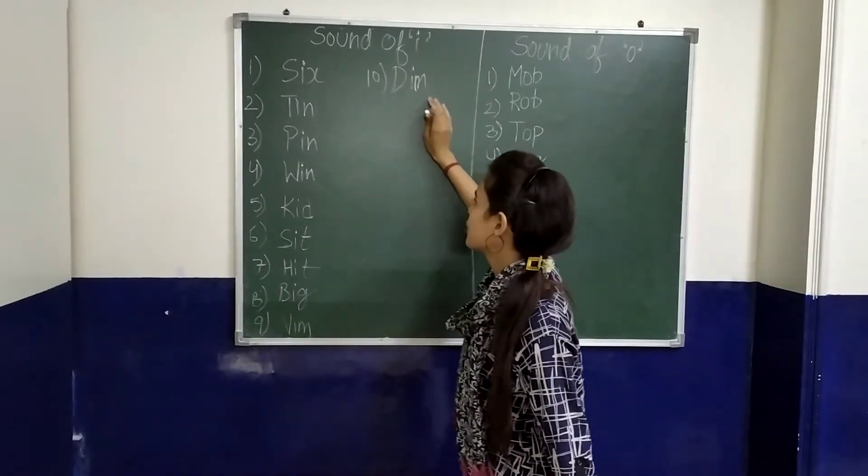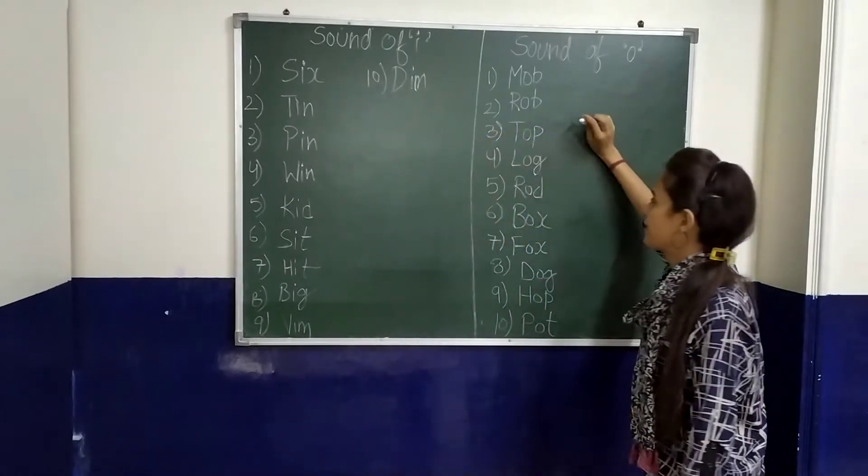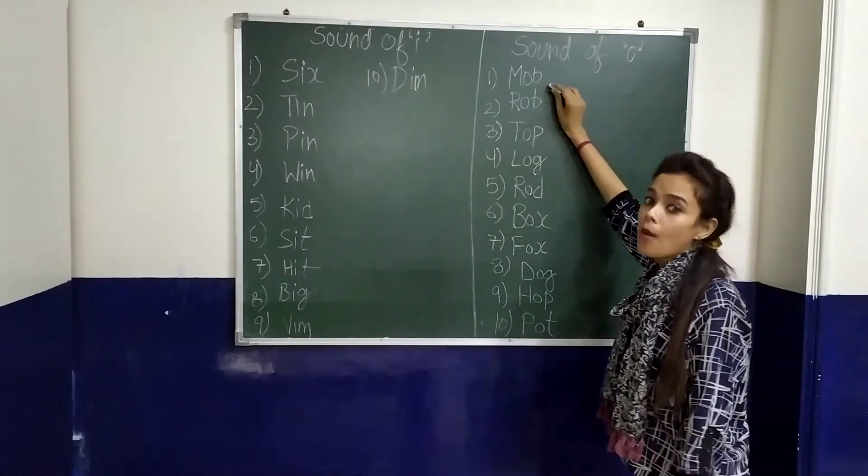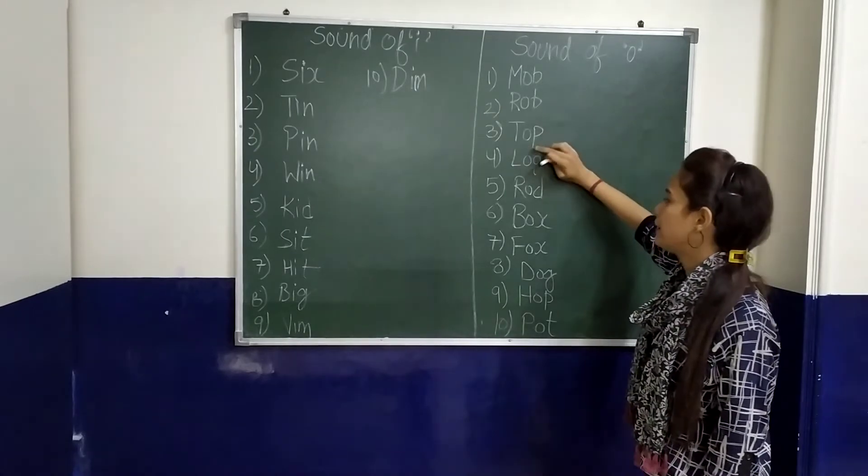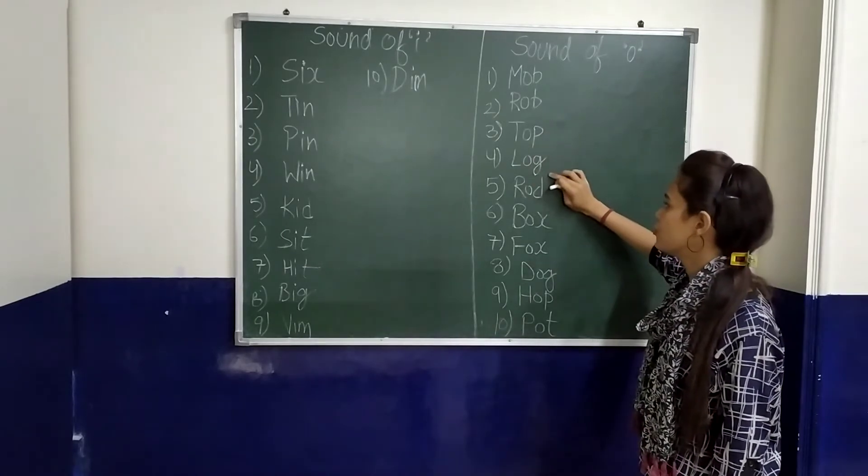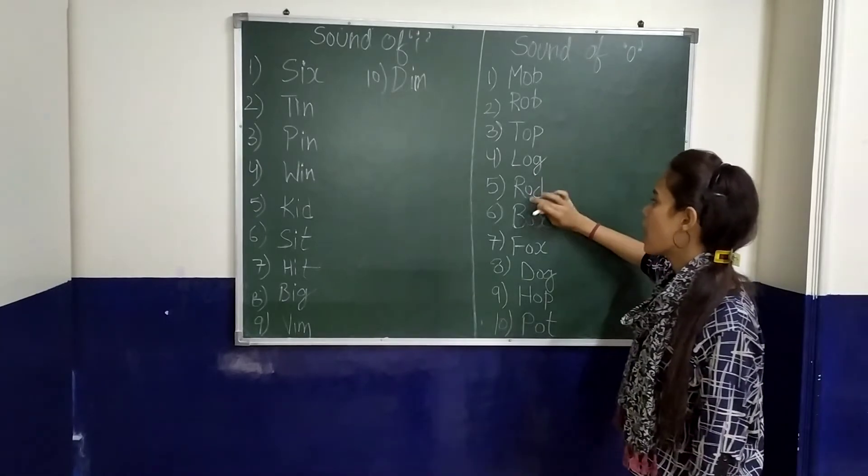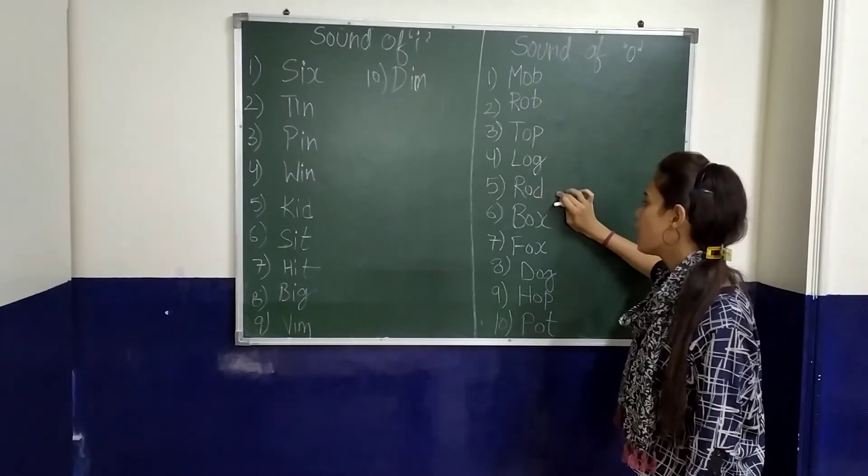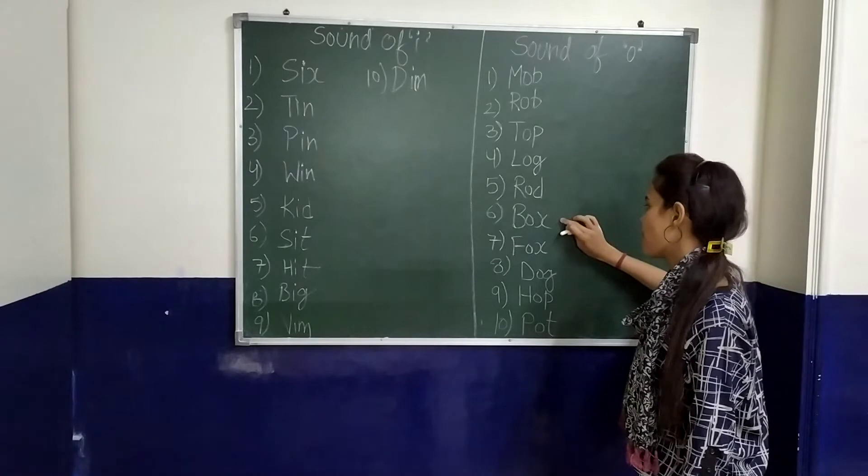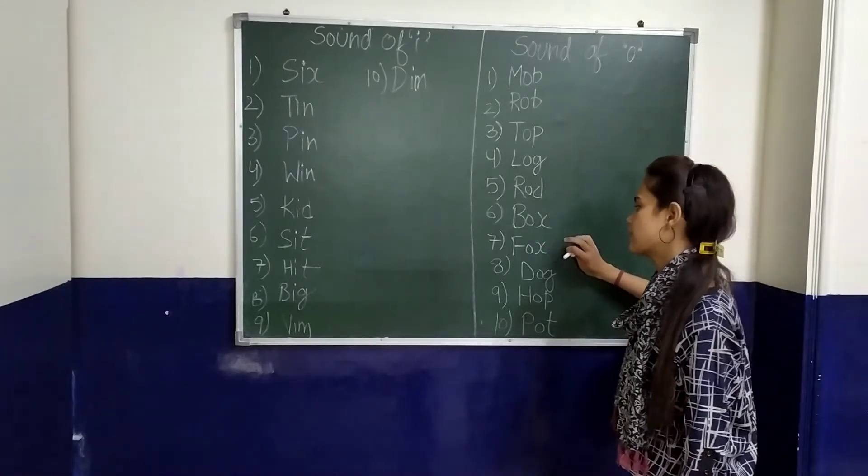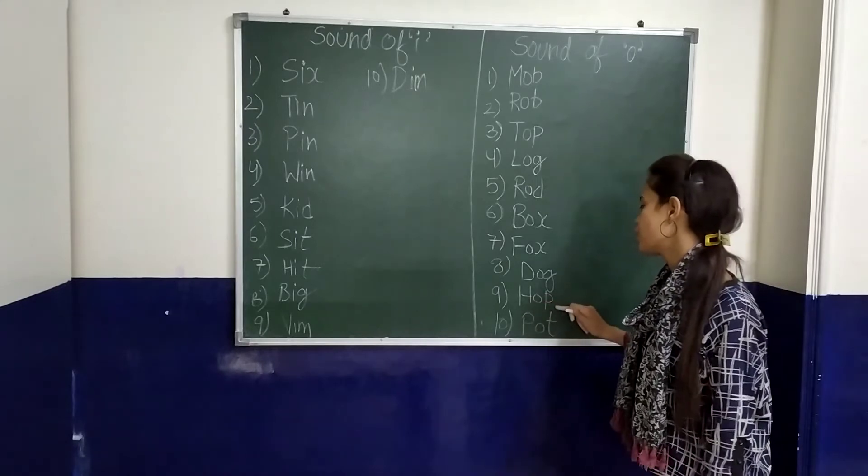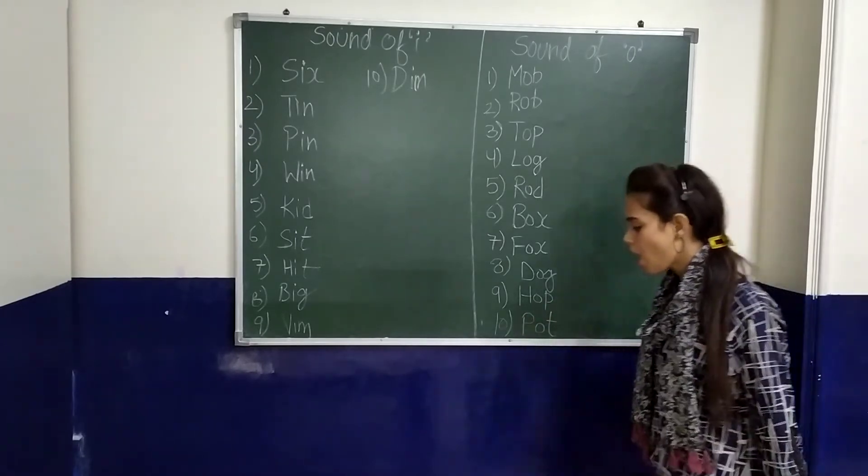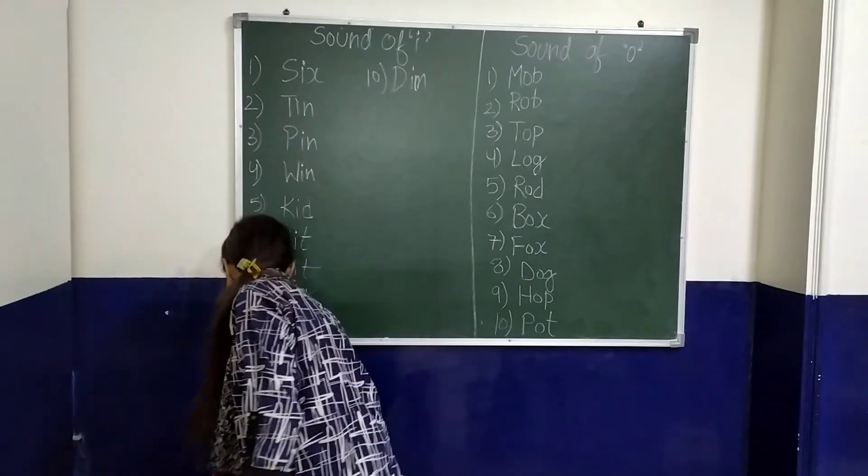I have sound of I, sound of O practice. M-O-B, mob. R-O-D, rod. T-O-P, top. D-O-G, dog. L-O-G, log. R-O-D, rod. B-O-X, box. F-O-X, fox. D-O-G, dog. H-O-P, hop. P-O-T, pot. This way you can practice the sound of I.